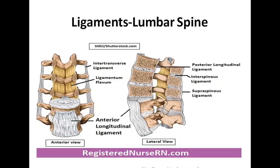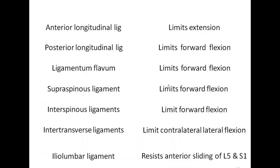Between the spinous processes of each vertebra, we have the connecting interspinous ligament. Just above the spinous processes, we have the supraspinous ligament. By the nomenclature of the ligaments, you can easily understand where they are located anatomically. Whenever the spine moves into extension toward the back, the anterior ligaments become tight. Whenever the spine performs flexion, the posterior ligaments are stretched — keeping check over the lumbar spinal movements.